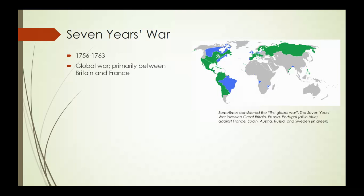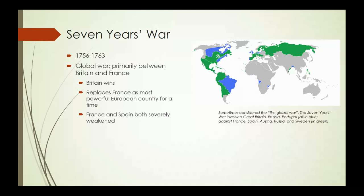Spain is probably 1B on our tiers. Great Britain and France are 1A. Britain is going to win this war at the expense of both France and Spain. Spain has been on the outs for a while — this war is going to solidify the fact that Spain is not one of the great powers anymore. But it's also going to solidify that Britain is the most powerful country in Europe, at least for a short time. France and Spain are both severely weakened.